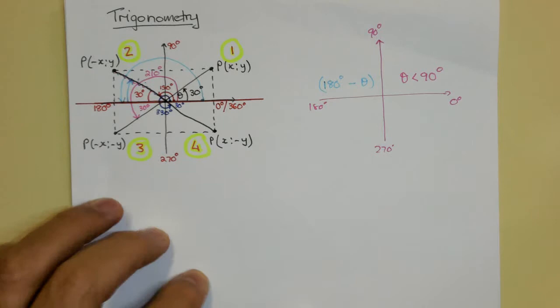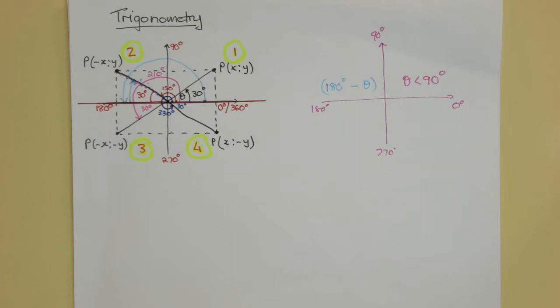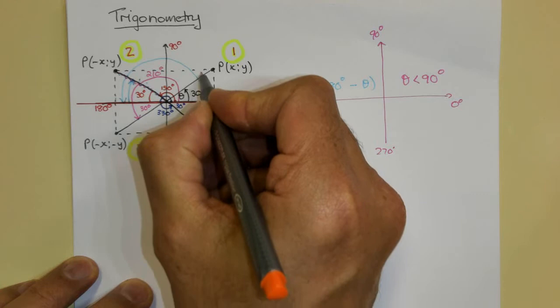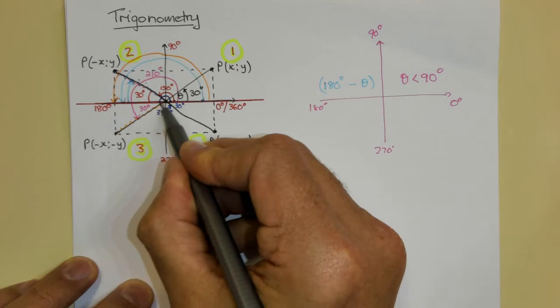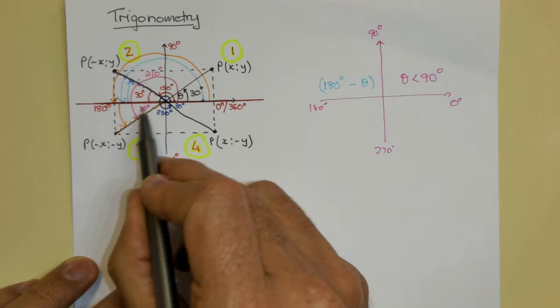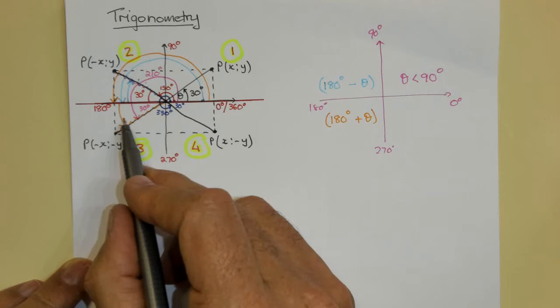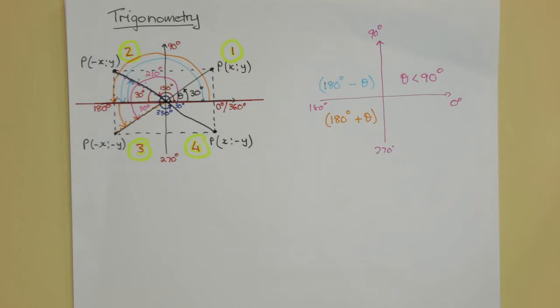In the third quadrant, my angle was 210 degrees. To reach that terminal arm, I go to 180 degrees and then bounce forward by however many degrees I'm working with. So for the third quadrant, the formula is 180 plus theta.